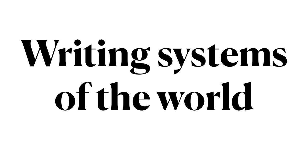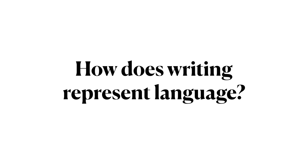This is Ling 270, Language, Technology, and Society. Today we are going to examine the writing systems of the world in the context of Chapter 3 of our textbook, Language, Technology, and Society. Chapter 3 examines the question: how does writing represent language?